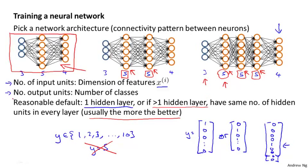So hopefully this gives you one reasonable set of default choices for network architecture. If you follow these guidelines, you'll probably get something that works well. In a later set of videos where I'll talk specifically about advice for how to apply learning algorithms, I'll actually say a lot more about how to choose a neural network architecture — including how to make good choices for the number of hidden units, number of hidden layers, and so on.